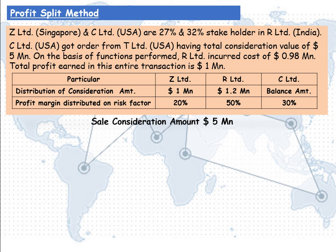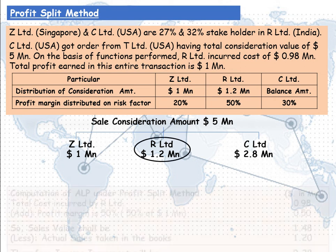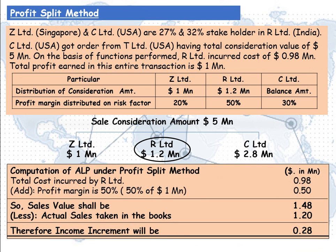The total sales consideration of $5,000,000 is distributed among 3 associate companies: Z Limited $1 million, R Limited $1.2 million, and the balance $2.8 million to C Limited. We are concerned only about Indian revenue, so we calculate the arms length price of R Limited only. Total cost incurred by R Limited is $0.98 million. Adding profit at 50% of $1 million equals $0.5 million. Therefore, sale value shall be $1.48 million. Less actual sales taken in books by R Limited of $1.2 million. Therefore, income increment is $0.28 million.